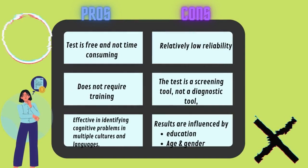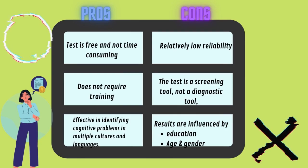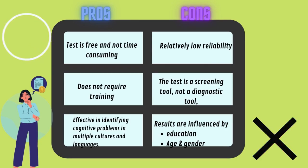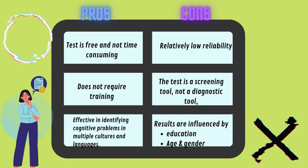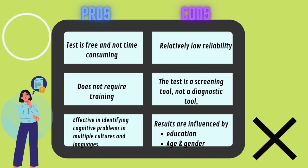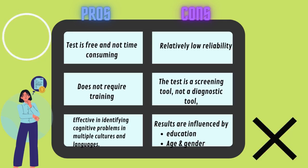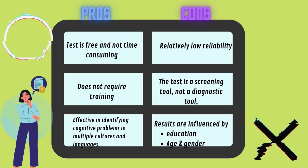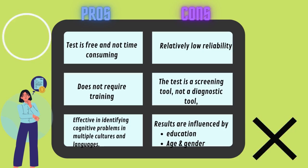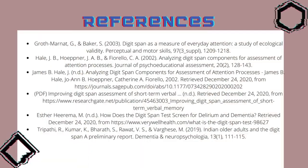Advantages of the Digit Span Test: it is free, requires less than 5 minutes to administer, does not require extensive training for the therapist, and is effective in identifying cognitive problems across multiple cultures and languages. Disadvantages: it has relatively low reliability, it is a screening tool rather than a diagnostic tool, and results are influenced by the participant's level of education, age, and gender.